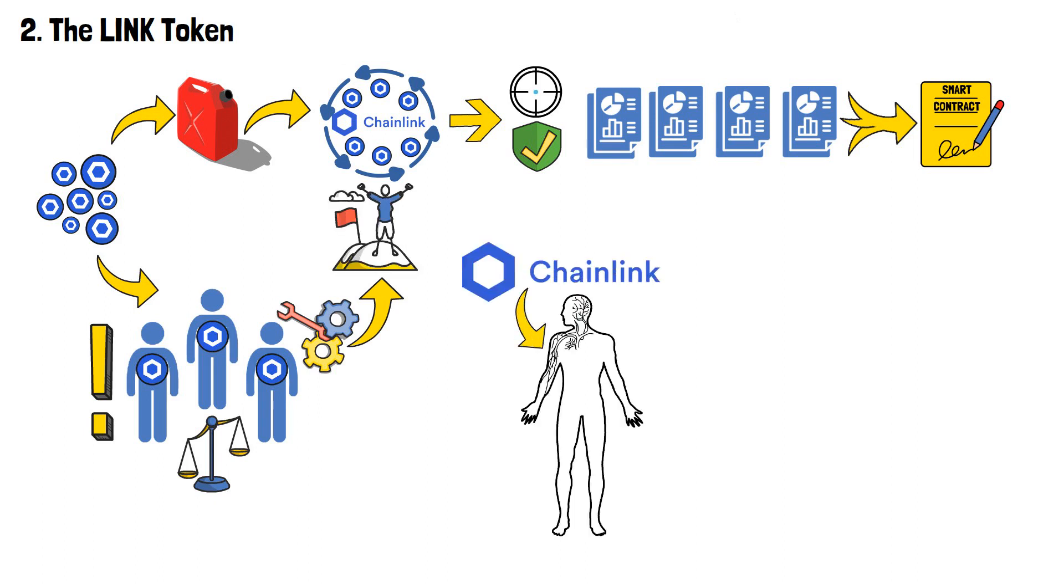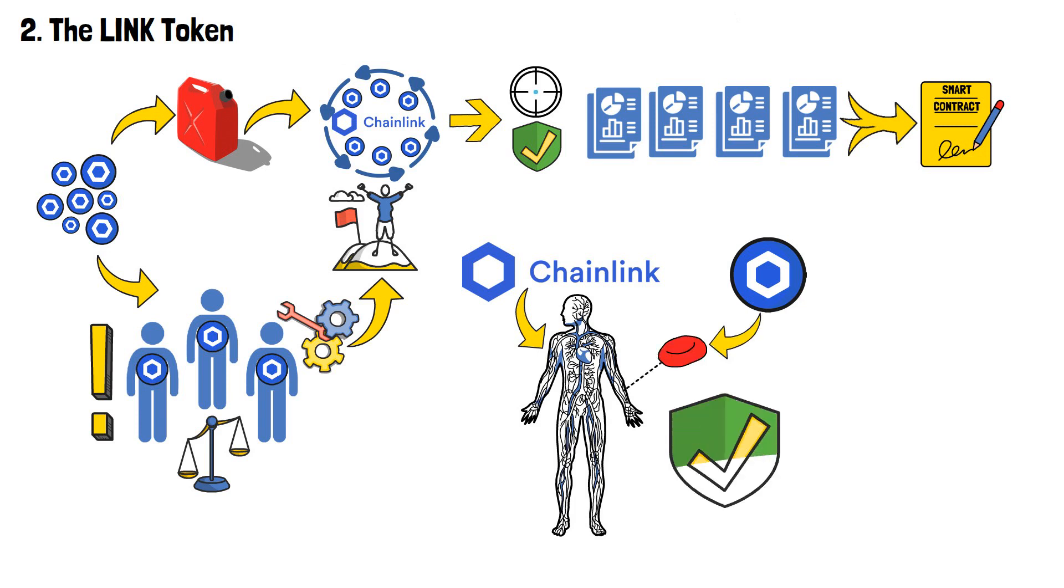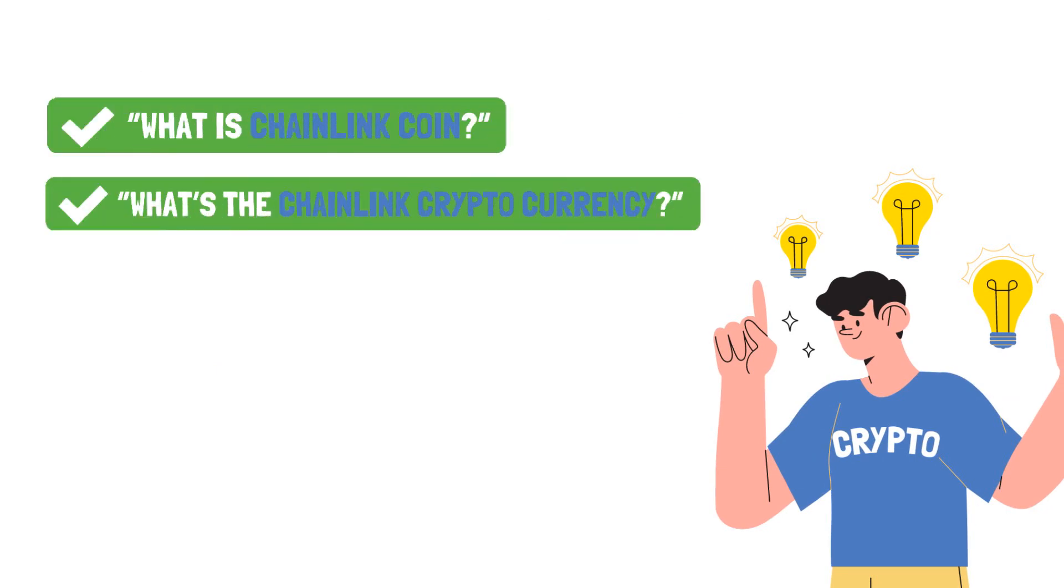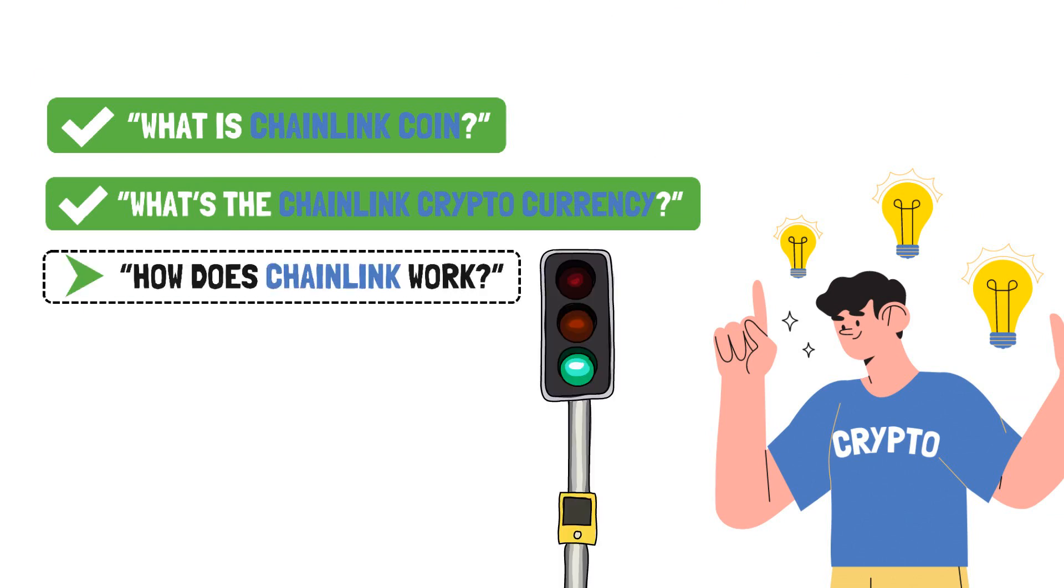To put it simply, if the Chainlink is the organism, then the LINK tokens are its blood cells, simultaneously ensuring its proper functionality, security, and motivation for individual members to continue doing their job to support the overall structure. Okay, now you know the answers to such questions as what is the Chainlink coin, or what is the Chainlink cryptocurrency? This means that we are ready to tackle the question of how does Chainlink work?